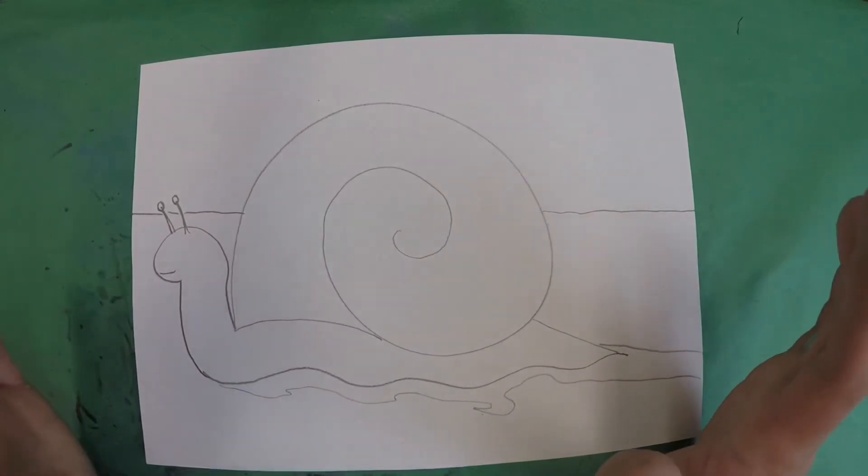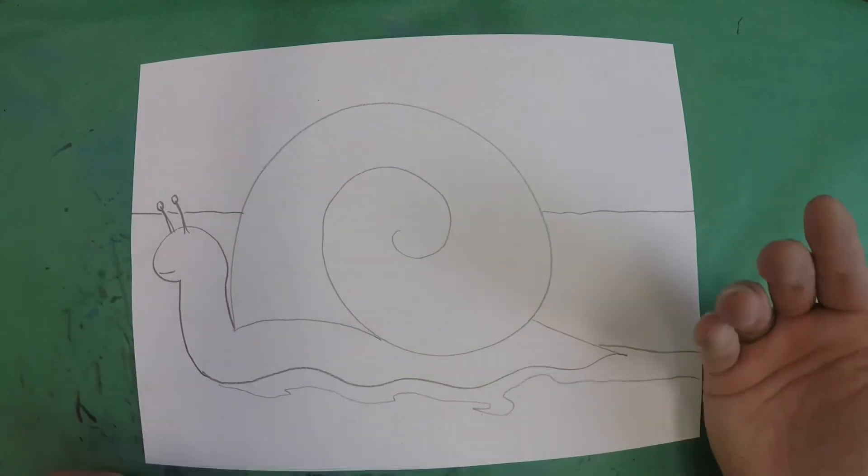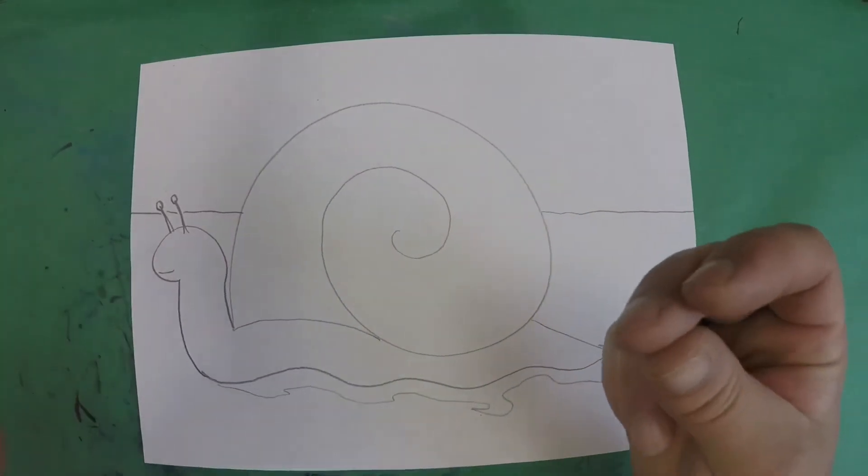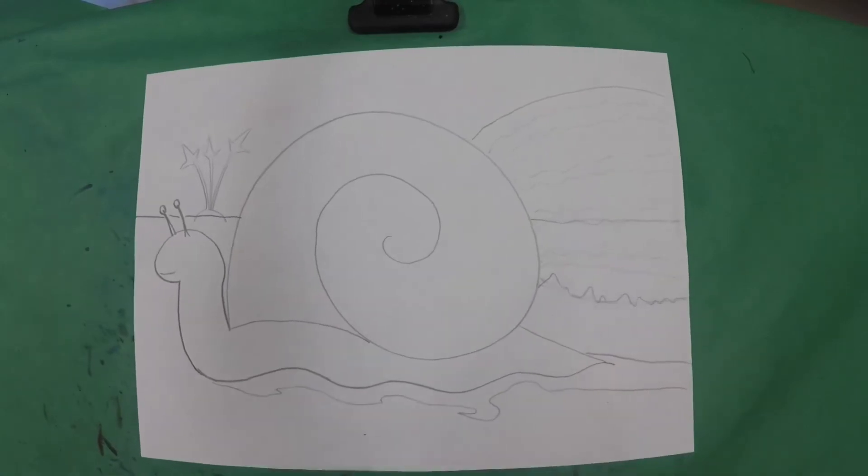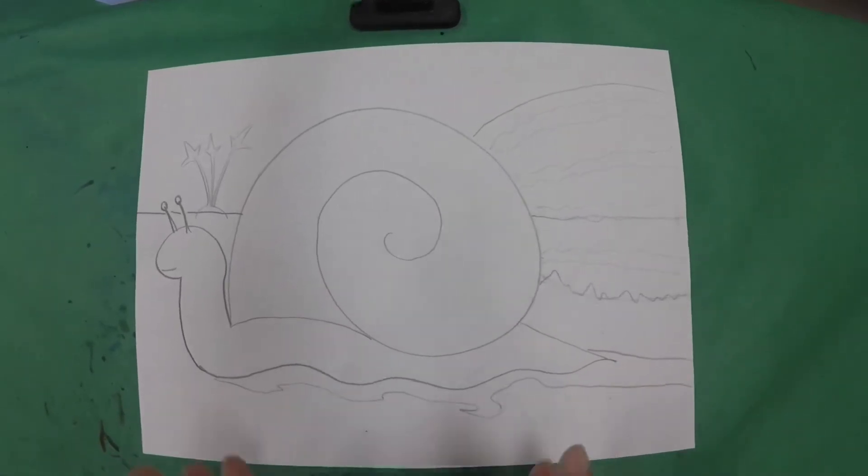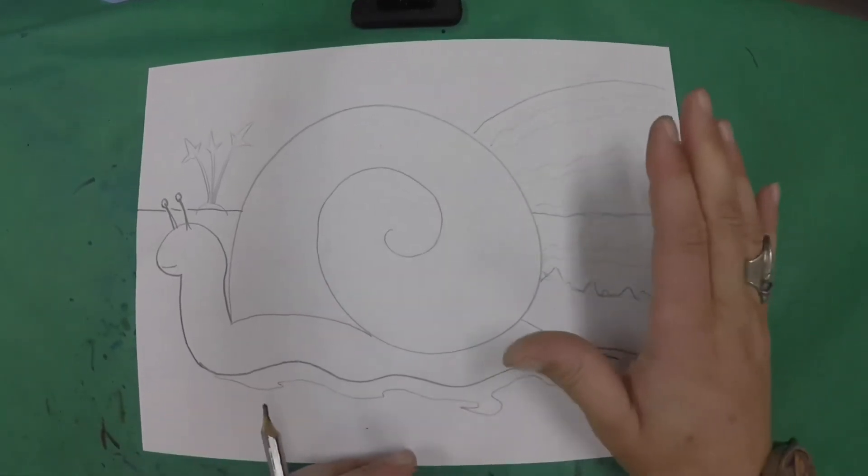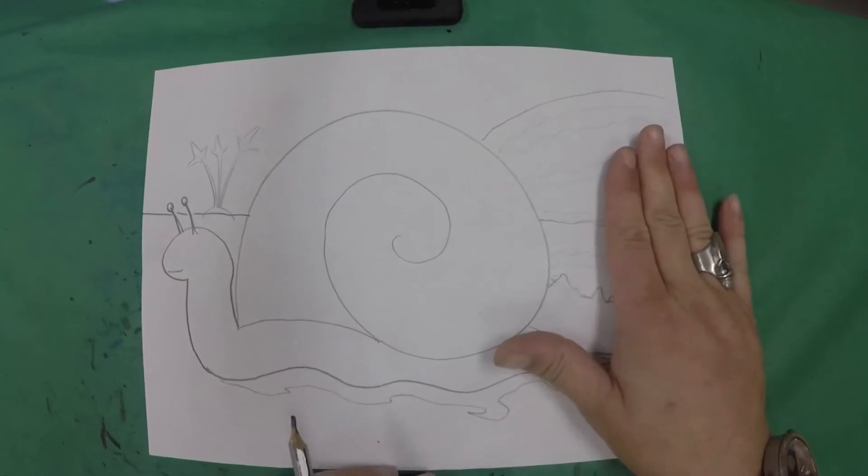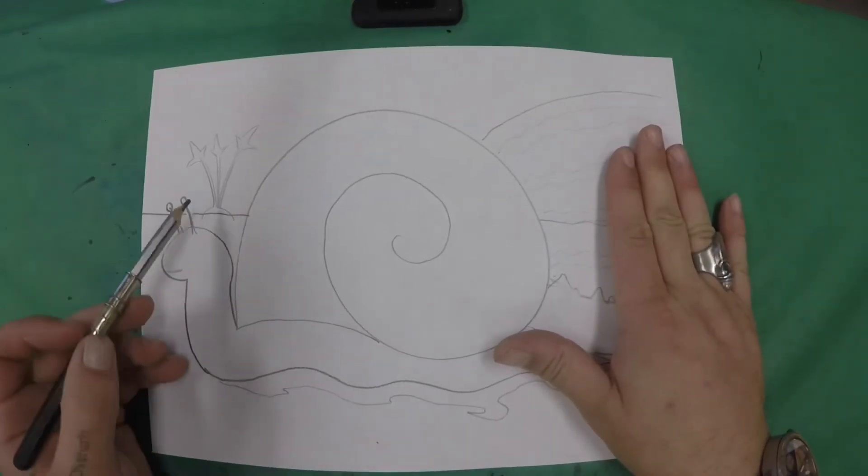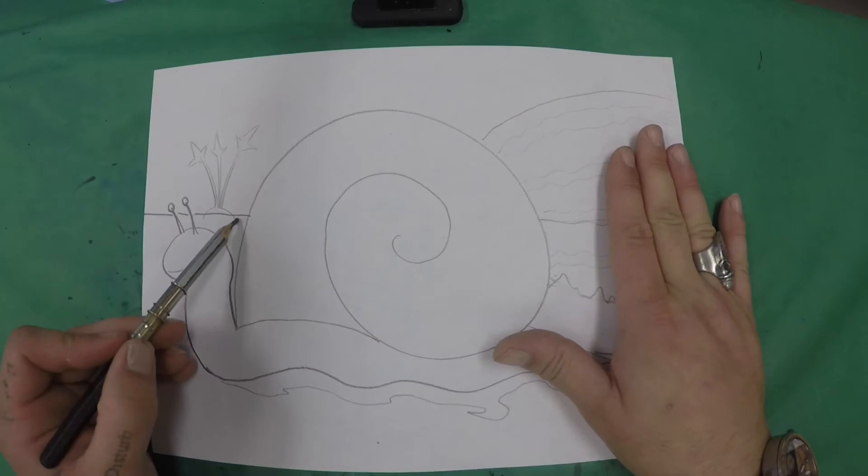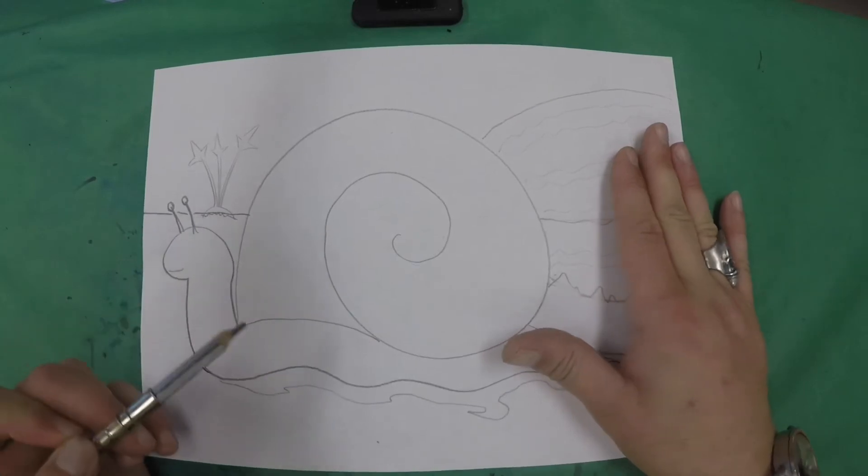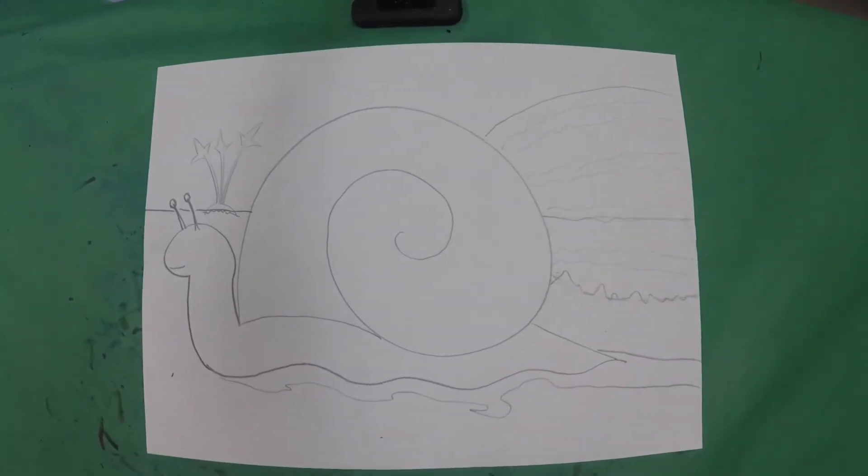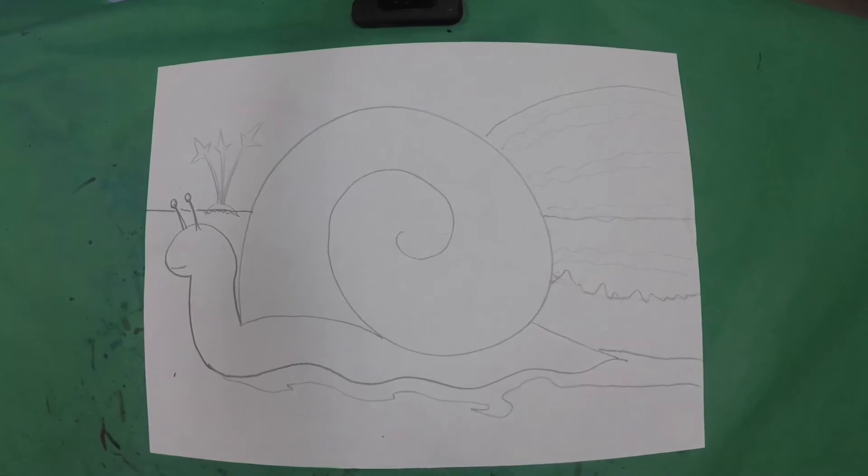So go ahead pause the video. Add in some of those details and we'll come back and we'll talk about our color and pattern and textures in just a moment. So here's my drawing with my extra details that I've added. I added a large watermelon in the background behind my snail as well as a carrot. It's just starting to poke up out of the ground. So at this point we're done with our drawing. We're done with our lines and our shapes and creating our space.